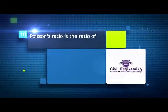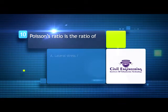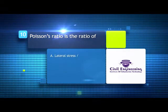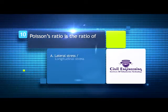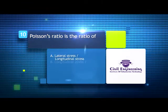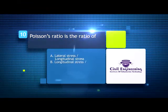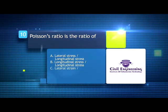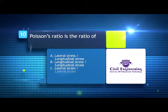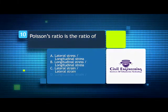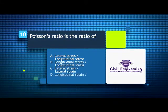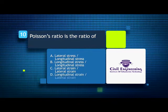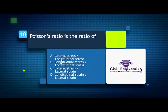Poisson's ratio is the ratio of: A) lateral stress by longitudinal stress, B) longitudinal stress by lateral stress, C) lateral strain by longitudinal strain, D) longitudinal strain by lateral strain.